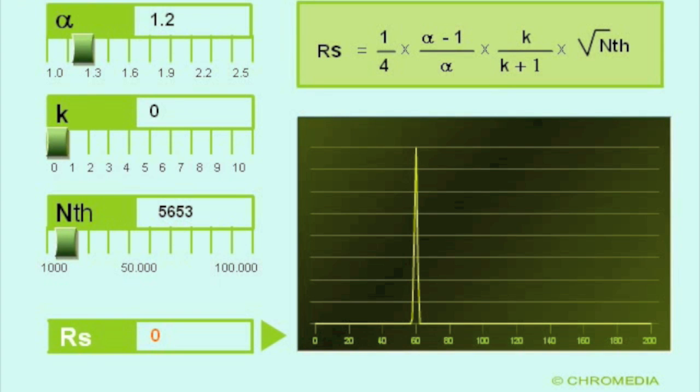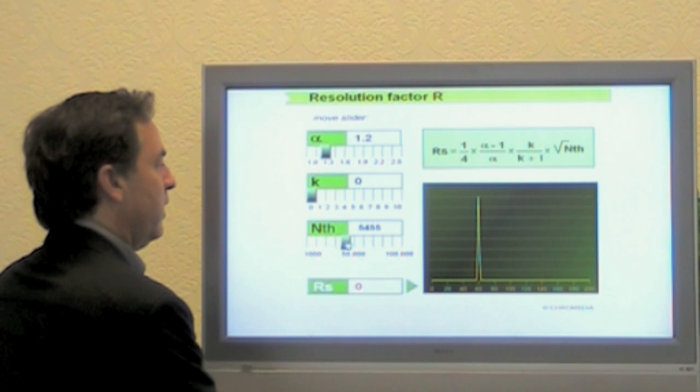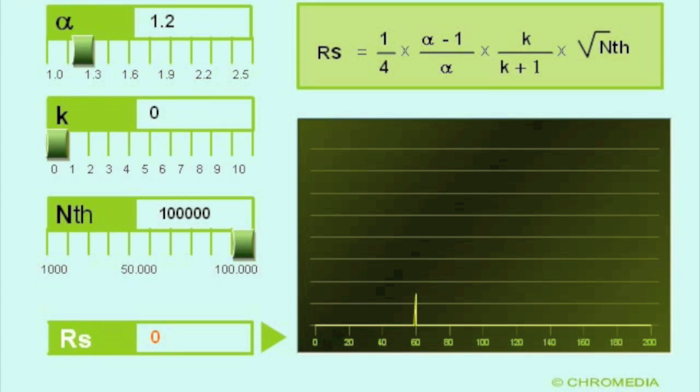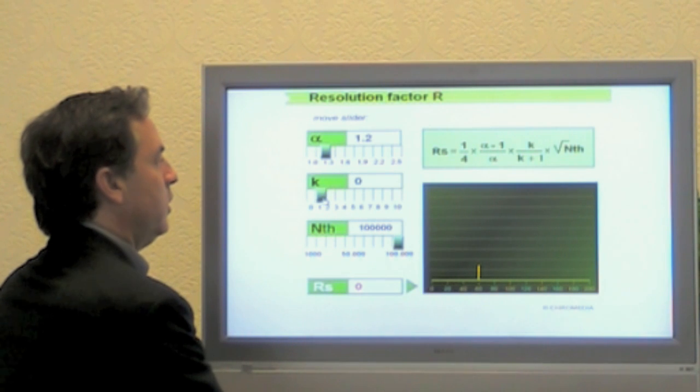Let's say I go out and I buy the world's best column. Let's say I buy a column with 100,000 theoretical plates. I still get no separation. The peaks are very skinny, but they're not interacting with the stationary phase. So I need to have some capacity factor. I need some interaction with the column.